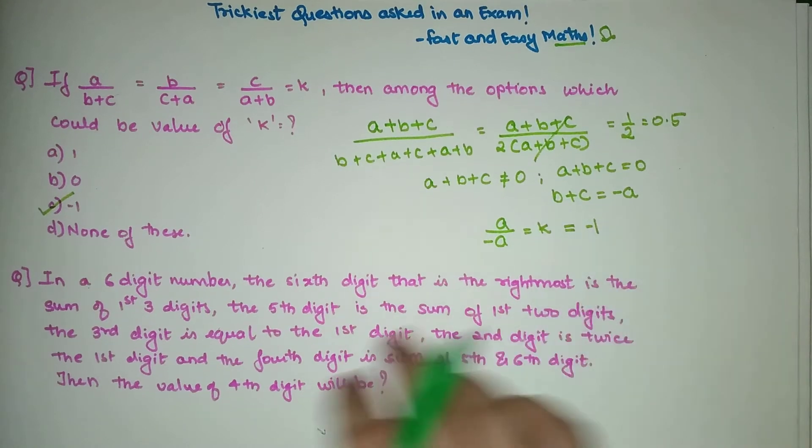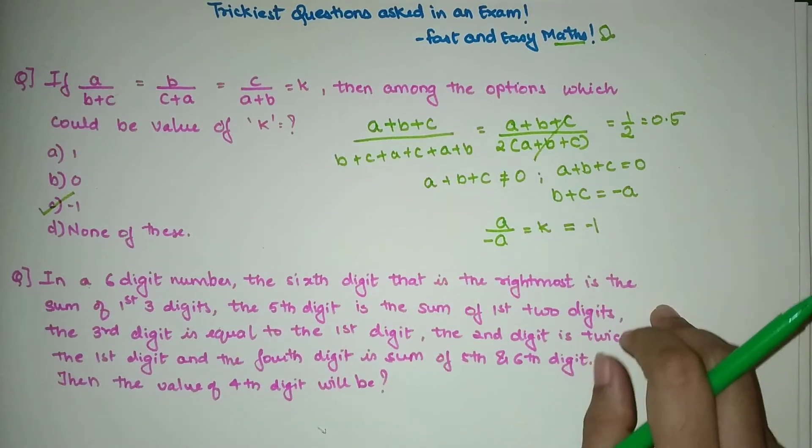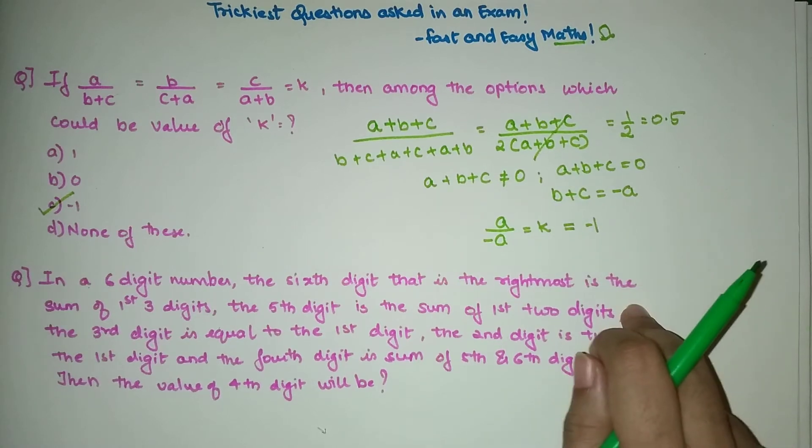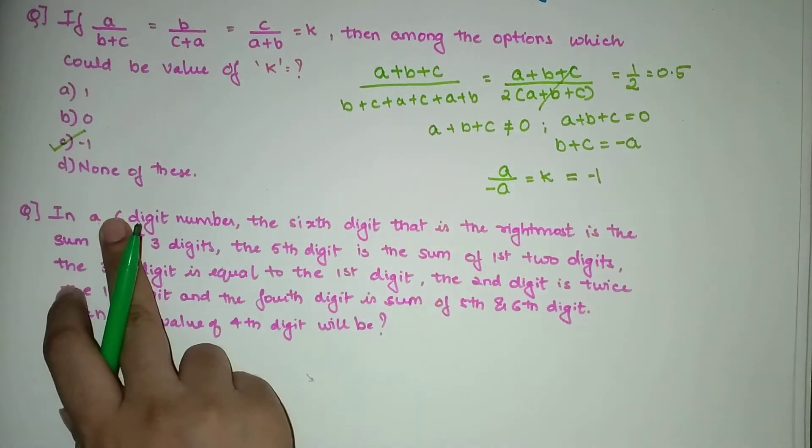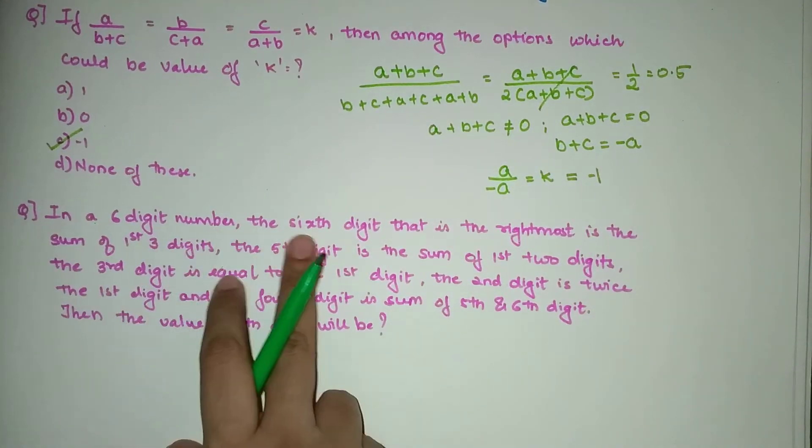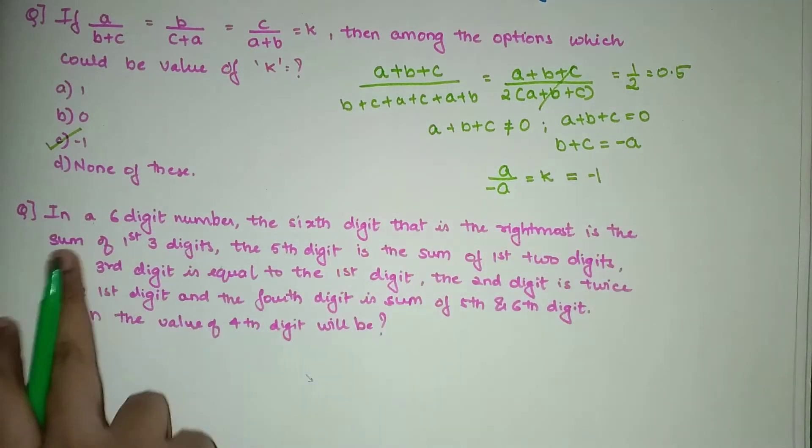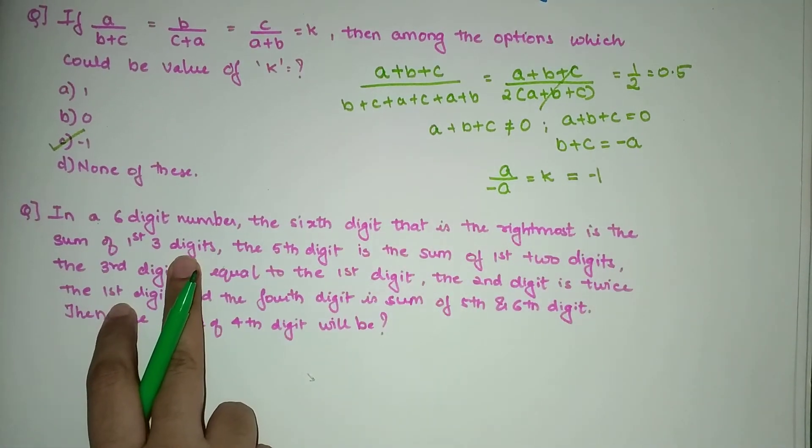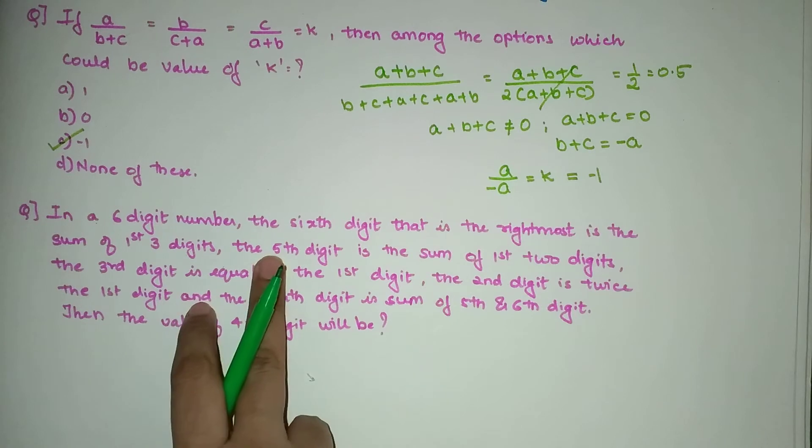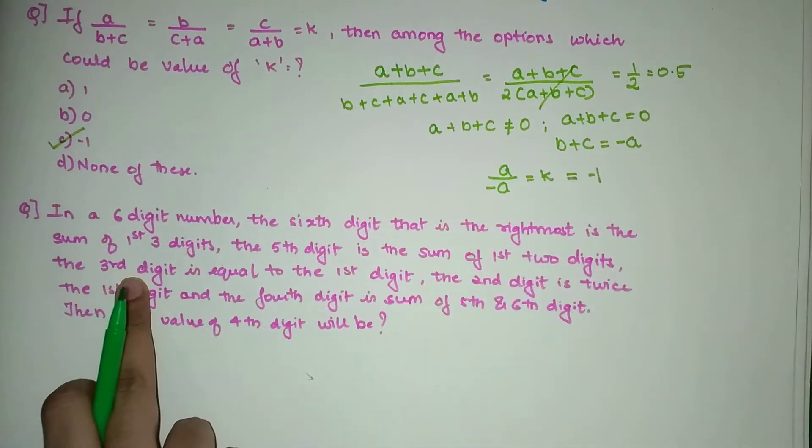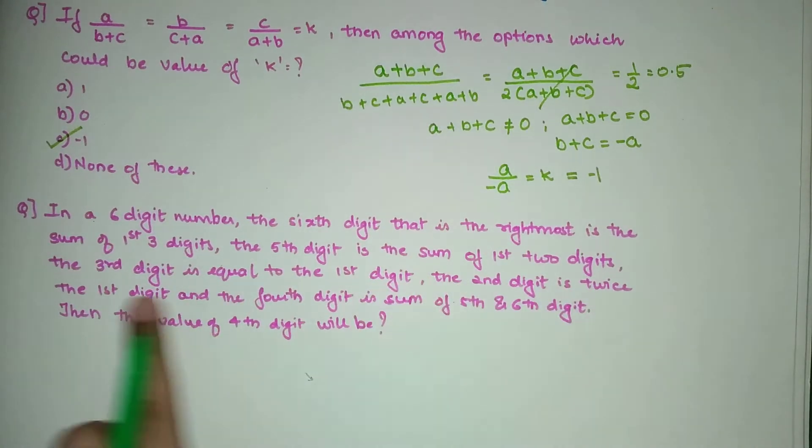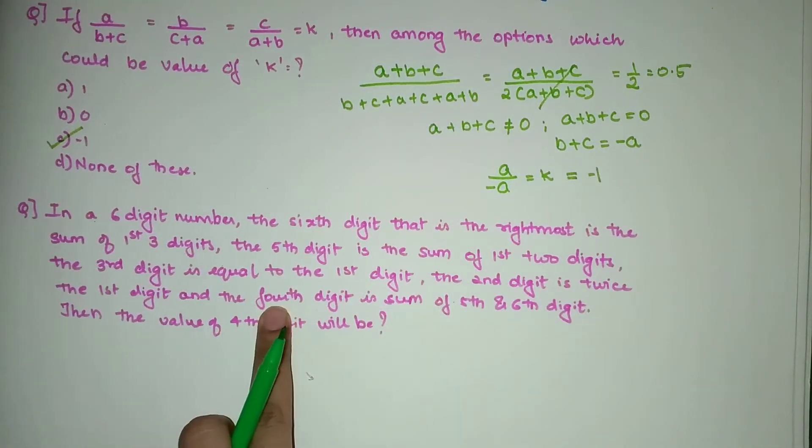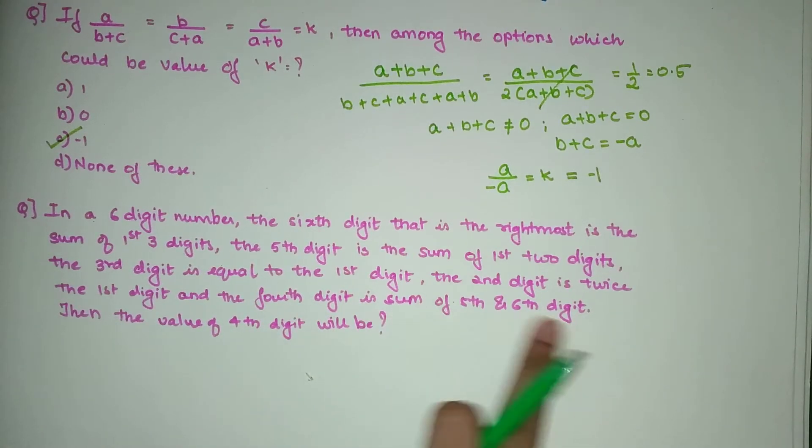Now this question, it has come as part of CAT 2019. Let's start. In a six-digit number, the sixth digit (the rightmost) is the sum of first three digits. The fifth digit is the sum of first two digits. The third digit is equal to the first digit. The second digit is twice the first digit. And the fourth digit is sum of fifth and sixth digit. Then find the value of the fourth digit.